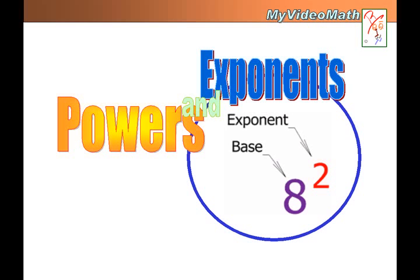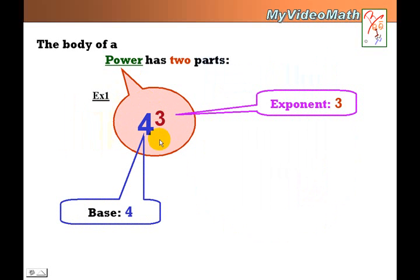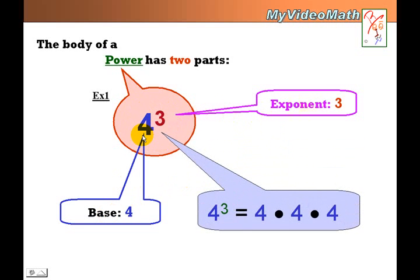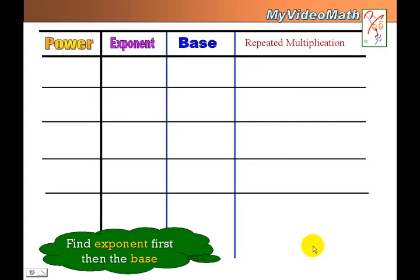In this lesson we're going to talk about powers and exponents. A power has two parts: an exponent and a base. For example, 4 to the third power is called a power. Mathematically, 4 to the third power means 4 times 4 times 4, which is repeated multiplication of the base. This is called factor form.